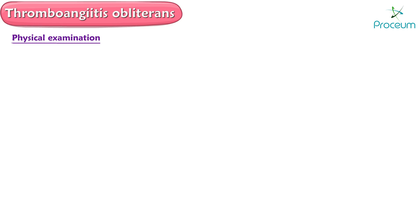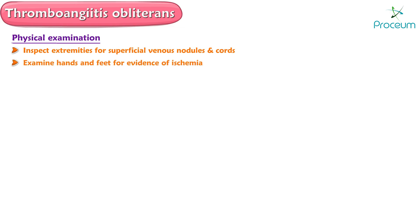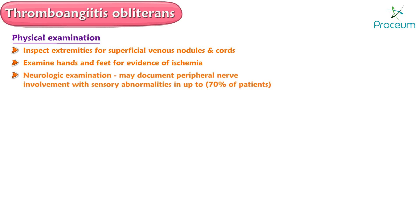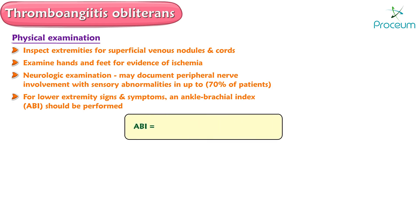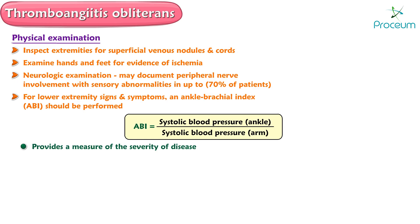All patients should have a thorough history and physical including a detailed vascular examination. The extremities should be inspected for superficial venous nodules and cords, and the hands and feet examined for evidence of ischemia. Neurologic examination may document peripheral nerve involvement with sensory abnormalities in up to 70% of patients. For patients with lower extremity signs and symptoms, an ankle brachial index should be performed, calculated by dividing the systolic blood pressure of the ankle by the systolic blood pressure of the arm, providing a measure of severity.